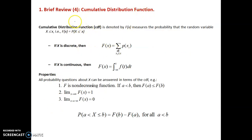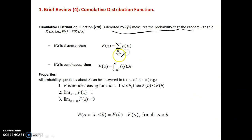The cumulative distribution function is denoted by F(x). It measures the probability that the random variable X is less than or equal to x. For a discrete random variable, F(x) = summation of P(Xi) for all Xi ≤ x. For a continuous random variable, F(x) = integral from minus infinity to x of f(t) dt.